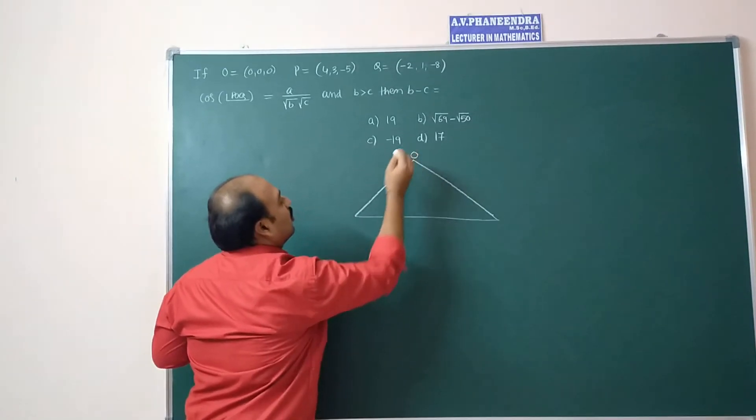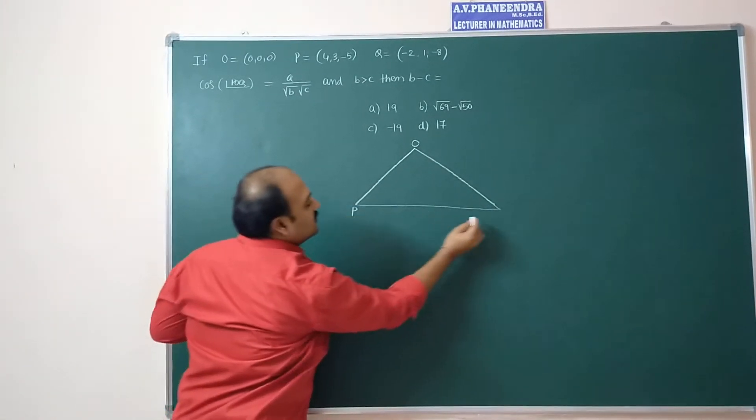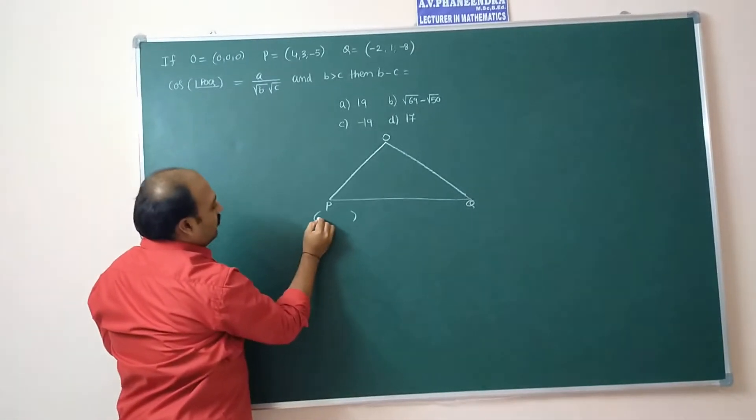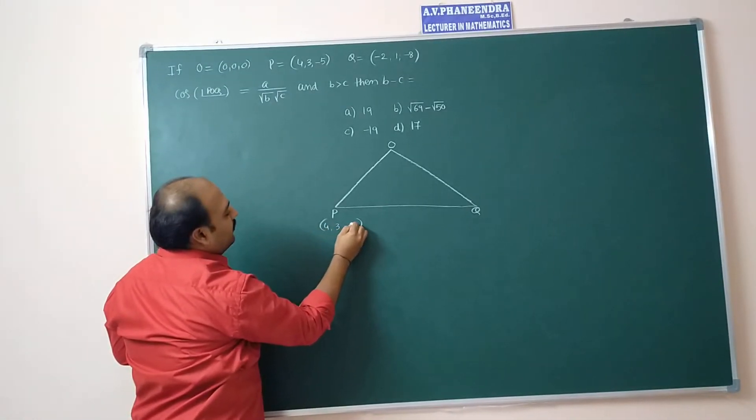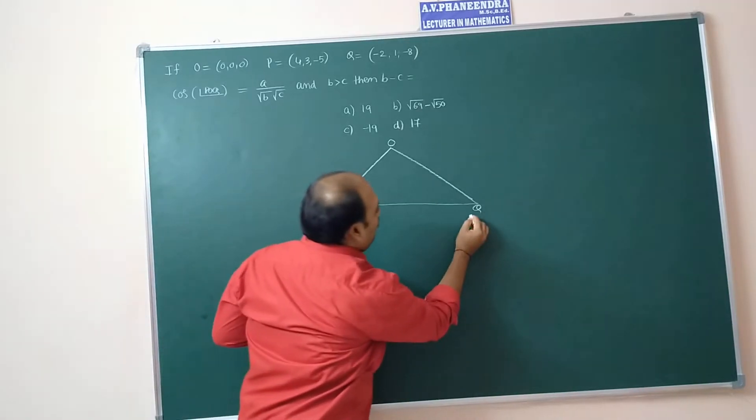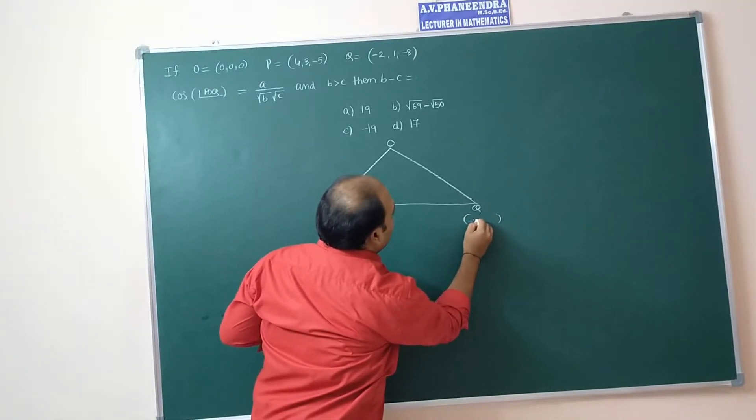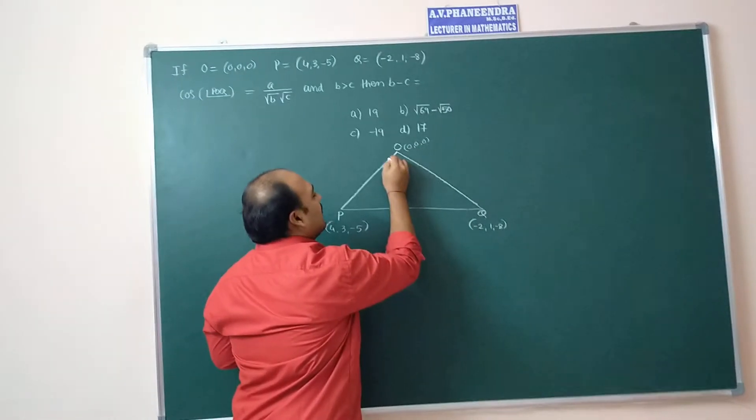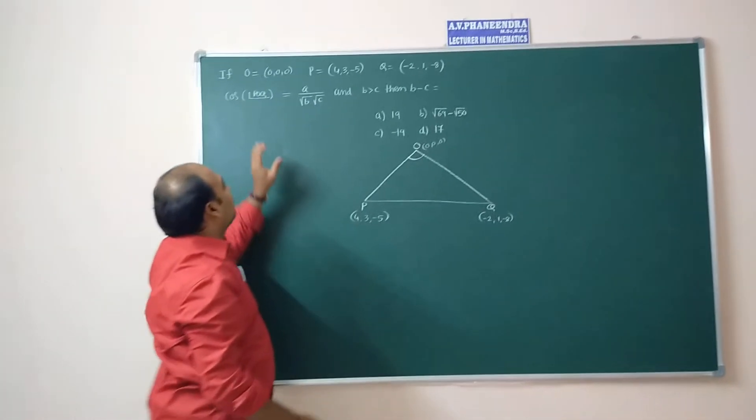So angle between POQ. First, draw the rough diagram according to the question. So this is O, this is P, this is Q. P point is 4, 3, minus 5 and Q point is minus 2, 1, minus 8.